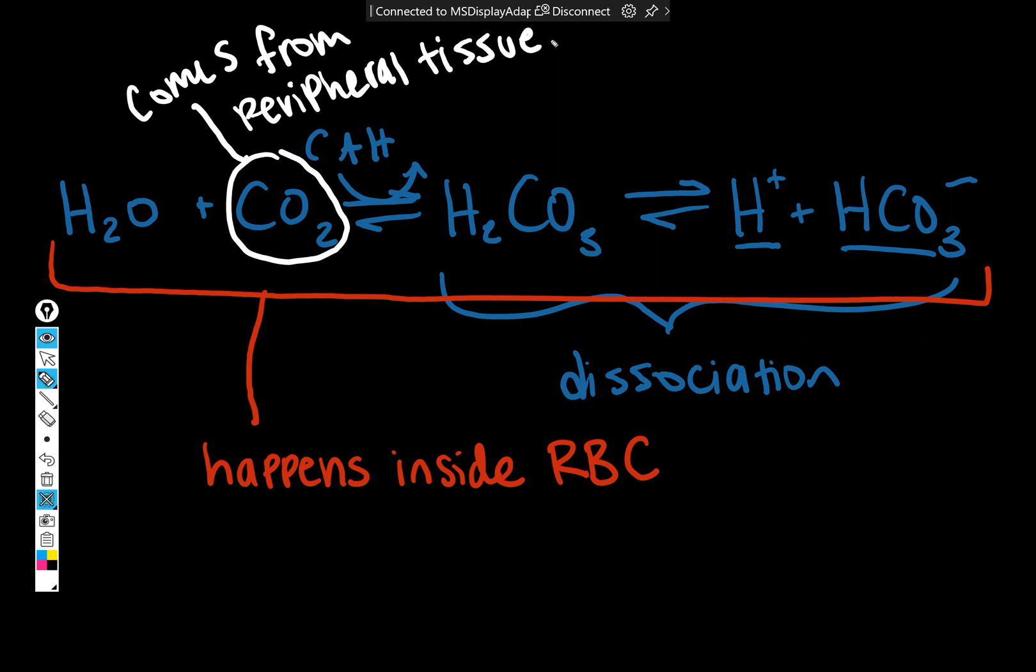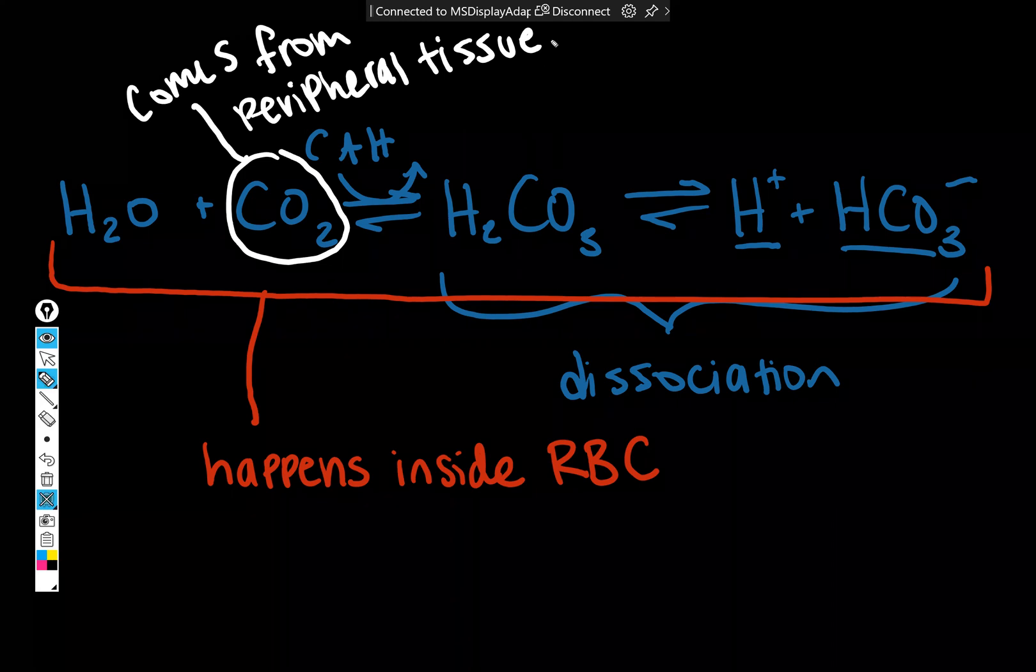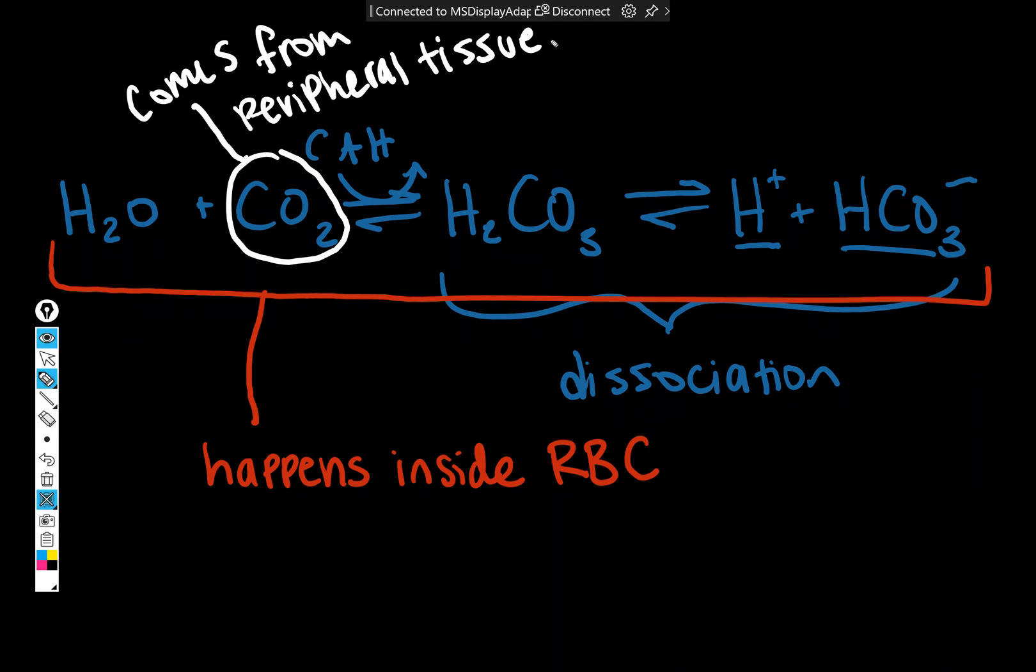And then carbonic anhydrase takes that and whatever water is laying around and turns it into carbonic acid, which immediately dissociates into a proton and bicarbonate. So this proton causes the pH inside of the red blood cell to drop and thus oxygen to dissociate from hemoglobin.